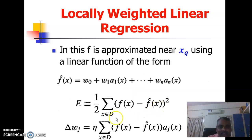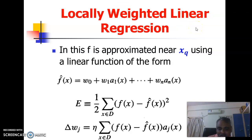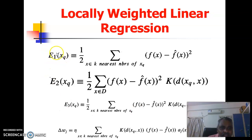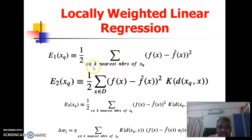What we saw here is a kind of global method — all training examples in D are used. But we are talking about local, so as per this topic, we will use only some examples which are near to the query point. Those errors which involve only nearby examples we write as E(q). So we have different expressions for the mean square error.